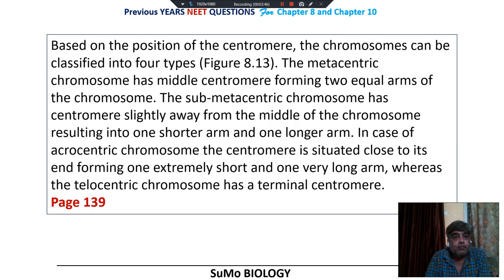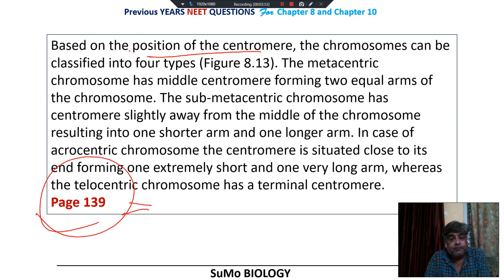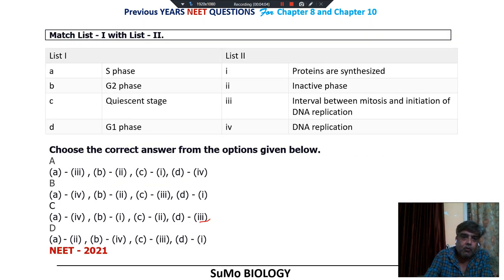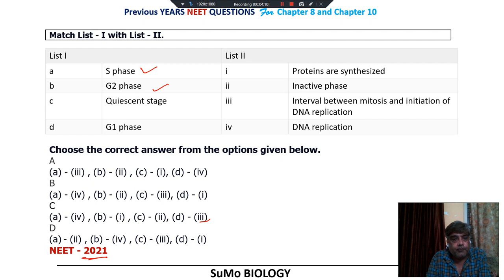Based on the position of the centromere, as described, this is mentioned on page number 139. All these questions discussed so far are directly from your NCERT. Now, from NEET 2021, a match-the-following question on cell cycle phases: S phase, G2 phase, quiescent phase, G1 phase.